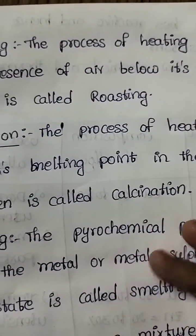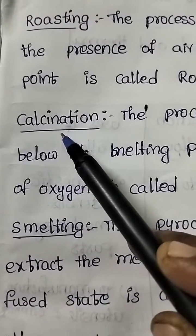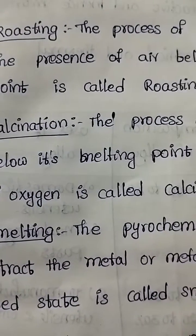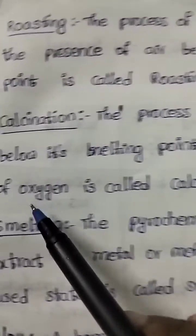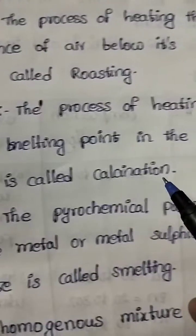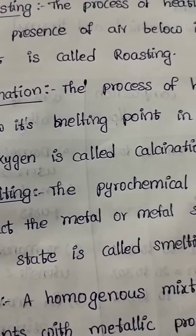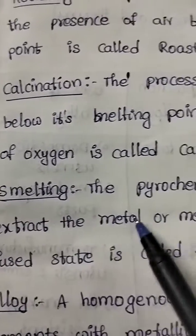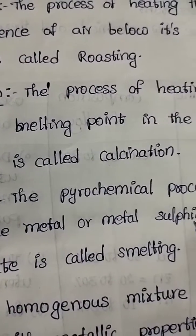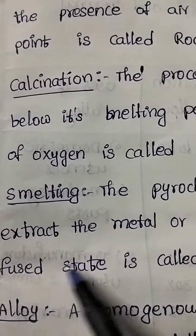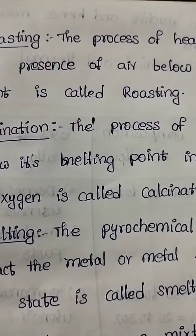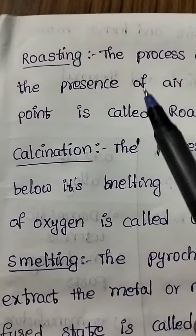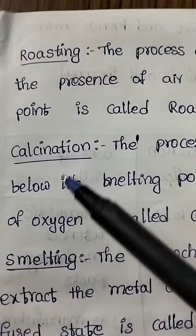To summarize: roasting is the process of heating the ore in the presence of air below its melting point. Calcination is the process of heating the ore below its melting point in the absence of oxygen. Smelting is the pyrochemical process used to extract the metal or metal sulfide in the fused state.